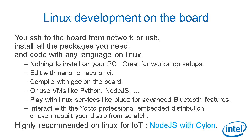And now, low-level Linux development on the board directly with command line. You SSH to the board from your network or over USB. You install all the packages you need and code with any programming language that runs on the board — C, C++, Python, Node.js, Shell, Java. Whatever works on Linux will work on Edison and Galileo this way. The great thing is that you have nothing to install on your PC; you just need a small SSH client.